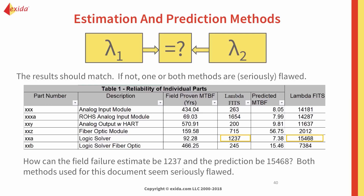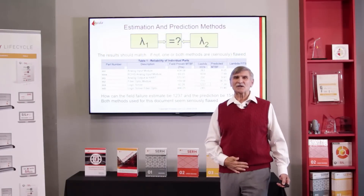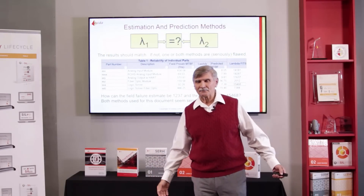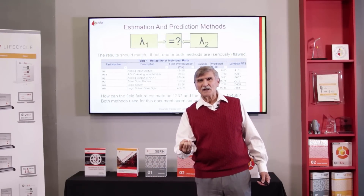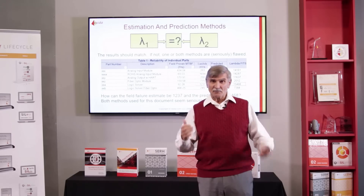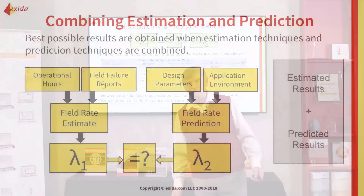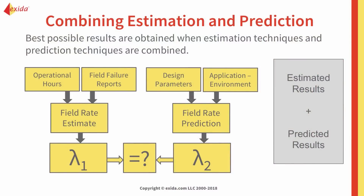In this case, both methods seem to be seriously flawed. As we talked about in previous parts, they kind of are — bad component database for the part stress, bad assumptions for the estimation. If we could combine estimation and prediction into one method where the different estimates and predictions kind of matched up, that would be great. And that's the goal.